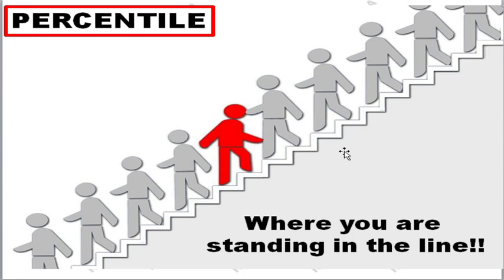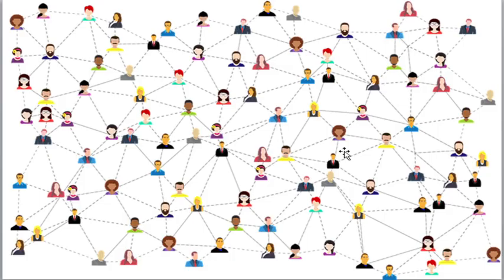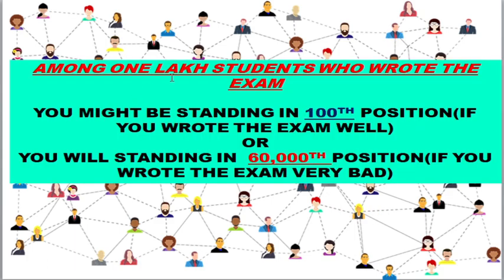If you are standing in 250th position, your rank is 250. If you are standing in 10,000th position, you definitely can't clear the exam. Among one lakh students who wrote the CSIR examination, you might be standing at the 100th position if you prepared and wrote very well, or at the 60,000th position if you wrote very badly. This is what percentile deals with — it helps us know where you are standing and whether you will clear the exam or not.